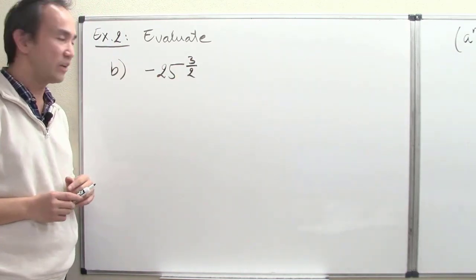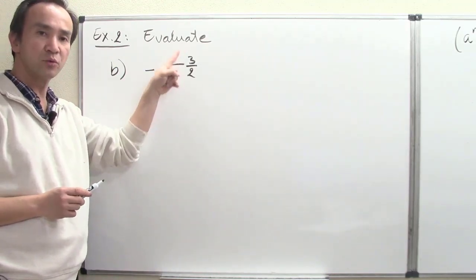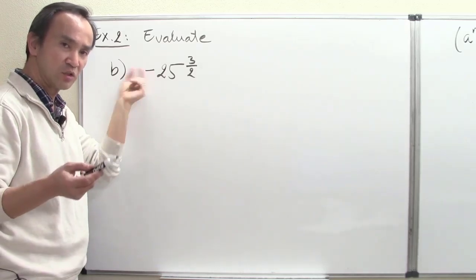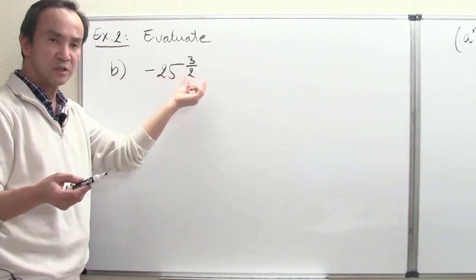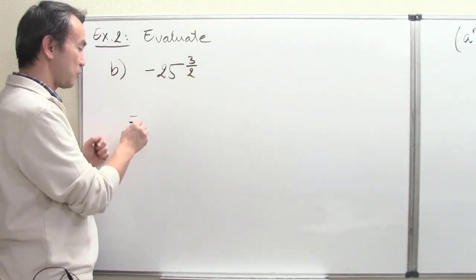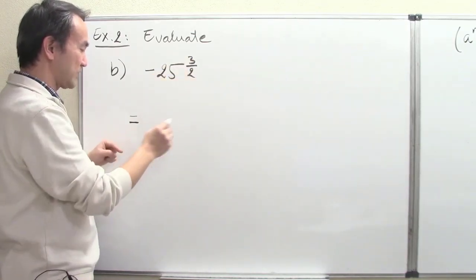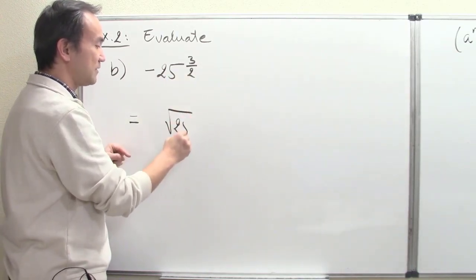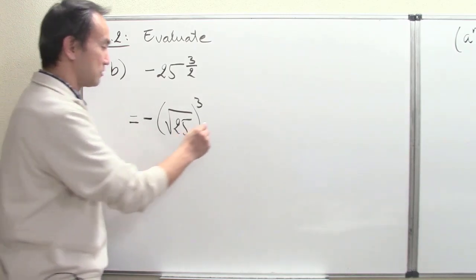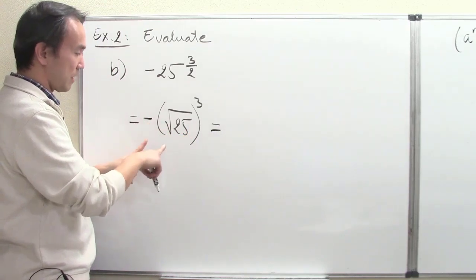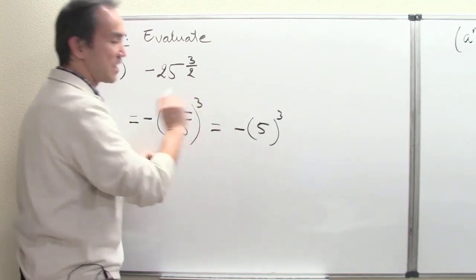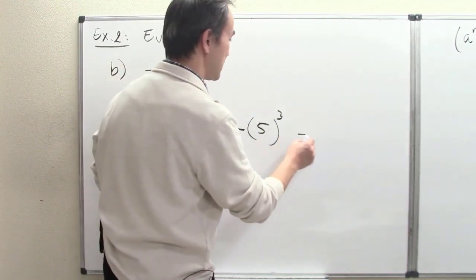Part B: evaluate negative 25 to the 3 halves power. The negative sign here is equivalent to subtracting a power, so we must raise 25 to the 3 halves first, then make it negative. The 3 halves power means we take the square root of 25, which gives 5, then raise that to the third power, and put a negative sign in front. So the final answer is negative 125.